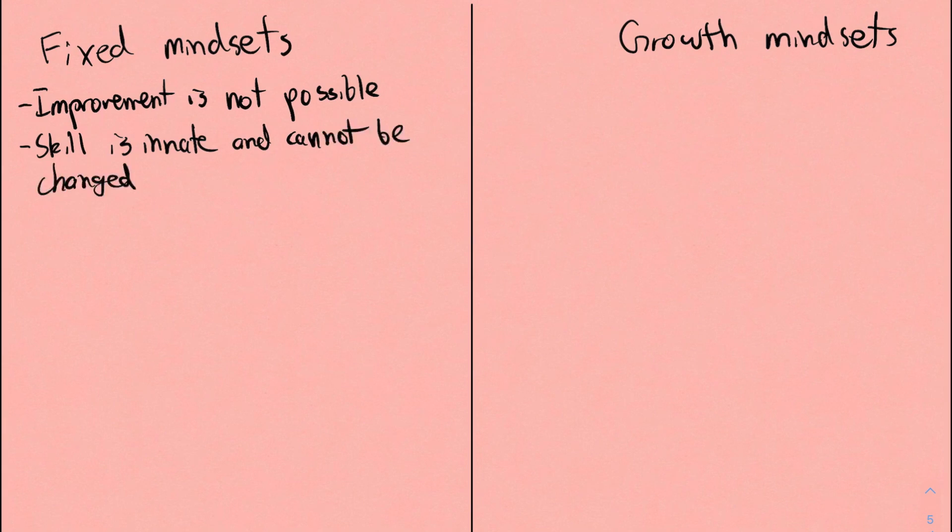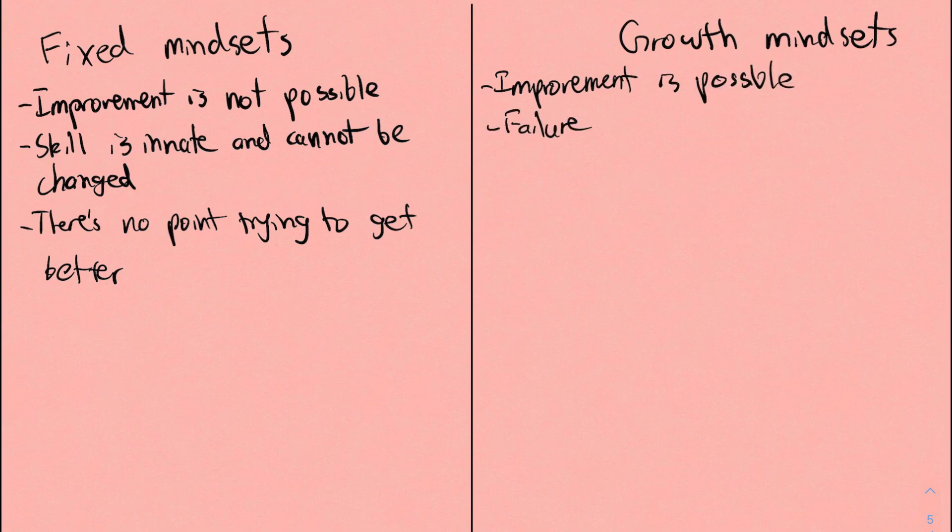But when I feel like an idiot after not being able to solve a question, that's the fixed mindset talking, thinking I won't be able to get any better and that I'm just stupid. The growth mindset, on the other hand, recognizes that improvement is very possible and that if you're bad at something, you're just inexperienced and you can get better by studying and learning and then eventually doing.